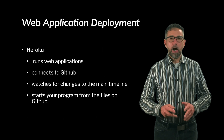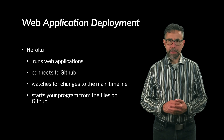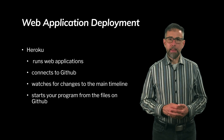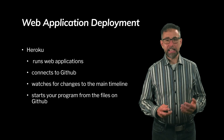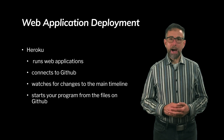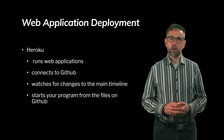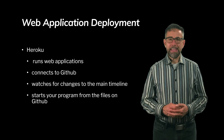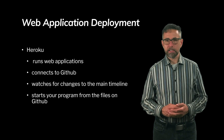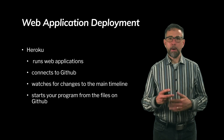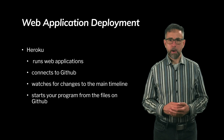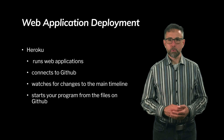On the other side, we have web application deployment. Heroku is an example of such a web-based system, and its job is to run web applications. It does that well by connecting to a source code management system like GitHub. Heroku watches to see if there are any changes to the source code managed by GitHub, and if there are changes, it transfers the files to its system and launches a new web application based on those files. In that way, it automatically updates new changes to your software regularly, automating the practice of deploying new software. These are two really good team and project management tools for web applications.